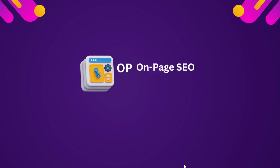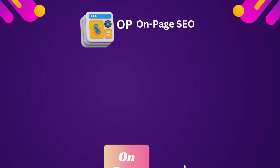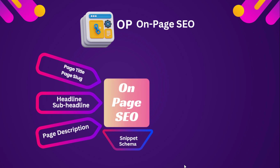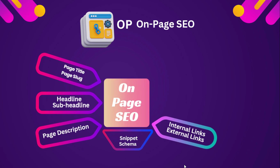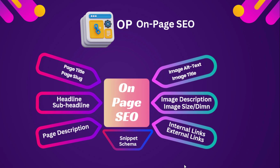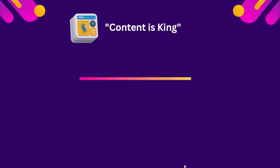For On-Page SEO, we first work on page title and page slug, then headlines and sub-headlines, then page description, snippet and schema, internal and external linking, image description, image size and dimensions, image alt text and title, keywords, and meta description. All these are the ingredients of the formula to bring our website to the front page of Google.